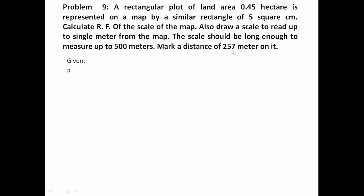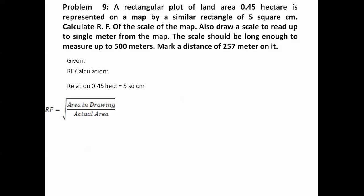Let us kick off with the RF calculation. We have been given the relation: 0.45 hectare equals 5 cm². The formula we're going to use is: RF equals the square root of (area in drawing divided by actual area). On putting in the values, we have the drawing area in cm² and the actual area in hectares.